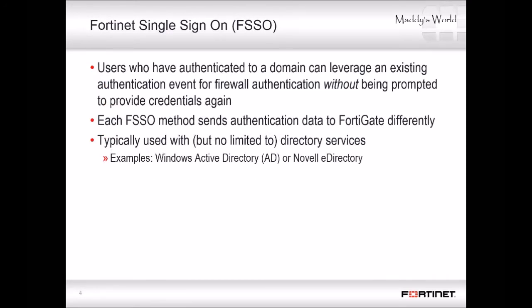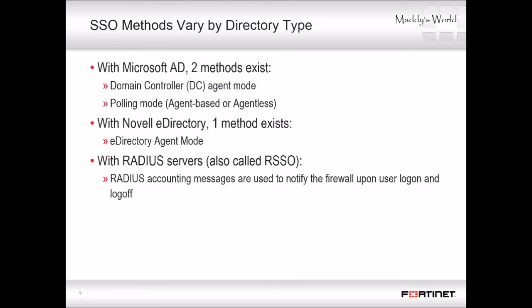FSSO enables FortiGate to leverage your network's existing authentication system for firewall authentication. Once a user authenticates, he or she can access other network resources without having to authenticate again. FSSO is typically used with directory service networks such as Windows Active Directory or Novell eDirectory, but it can also be implemented in other network environments. In this class, we will talk mostly about the two methods available for Windows Active Directory environments.